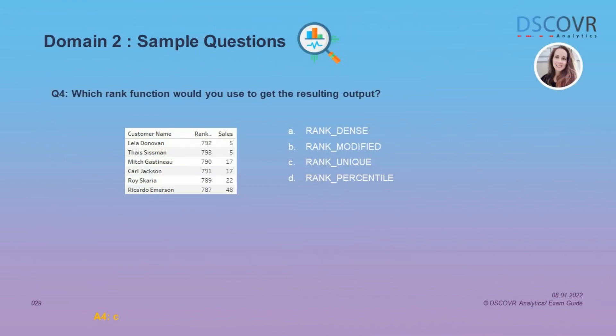In this question we have to specify which rank function was used to get the resulting output. We have customer name, rank, and sales values. If you look closely, even though two rows have the same sales values, they still get a different rank. The only function that gives a different rank for the same values is rank unique — so the answer here is C.